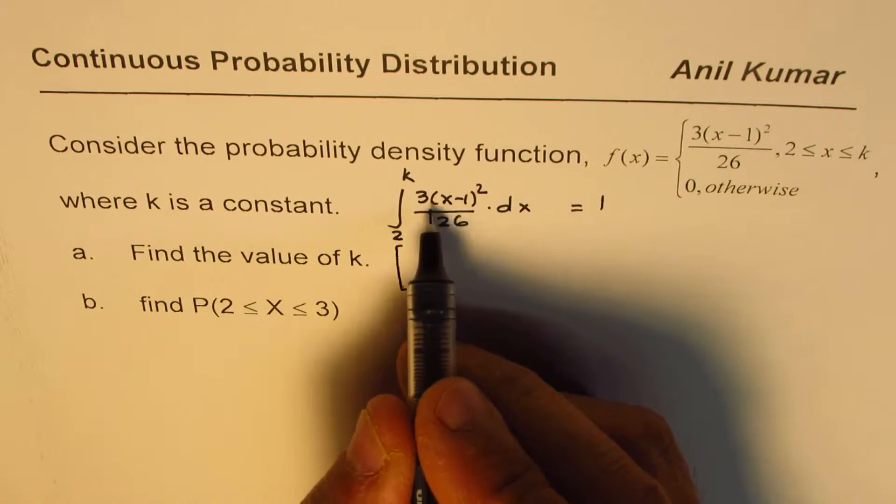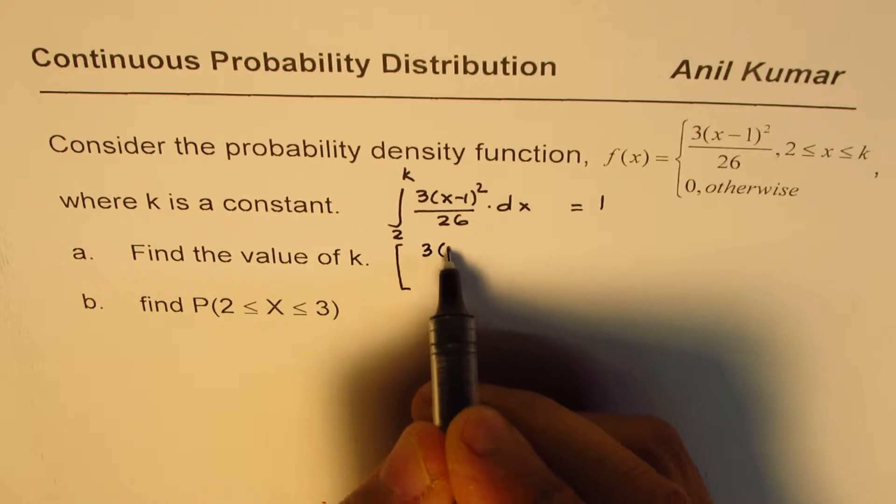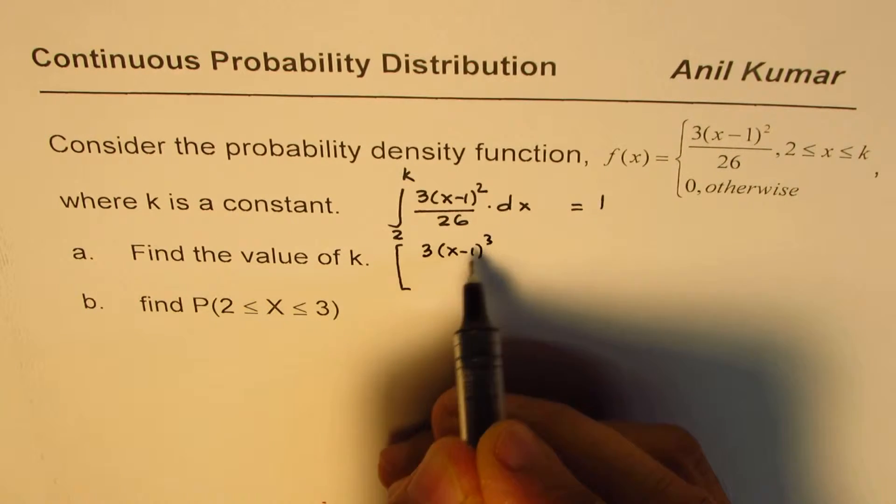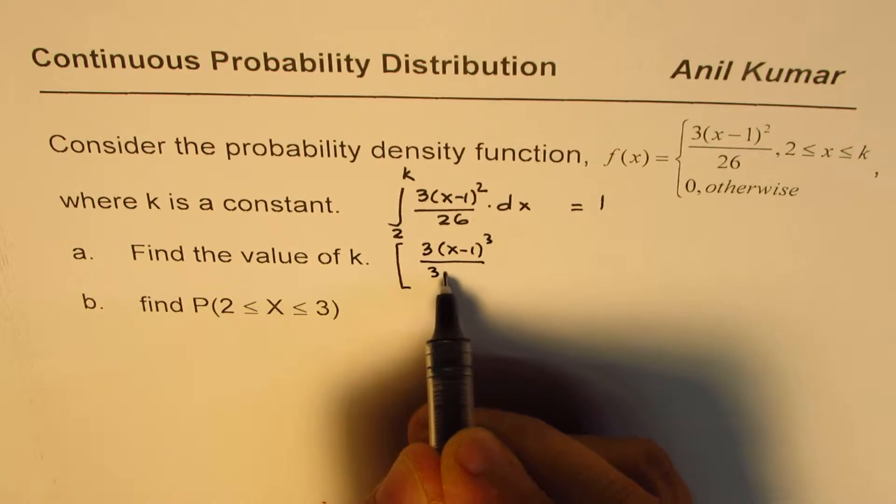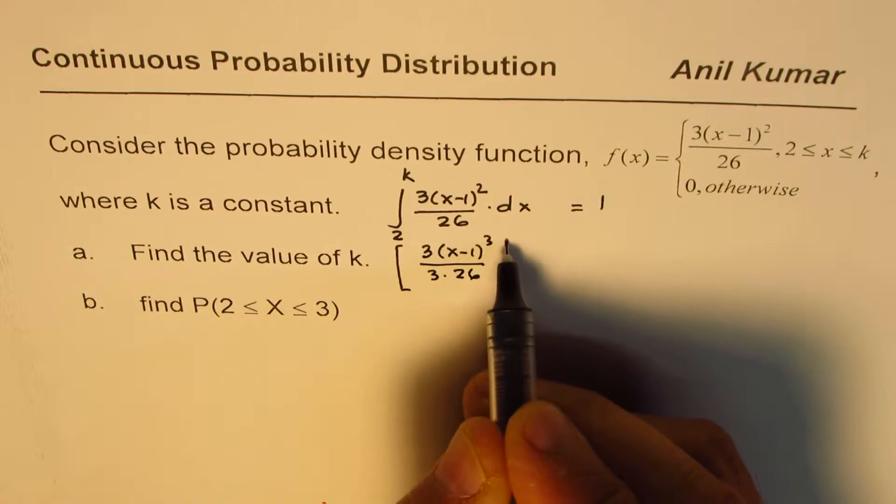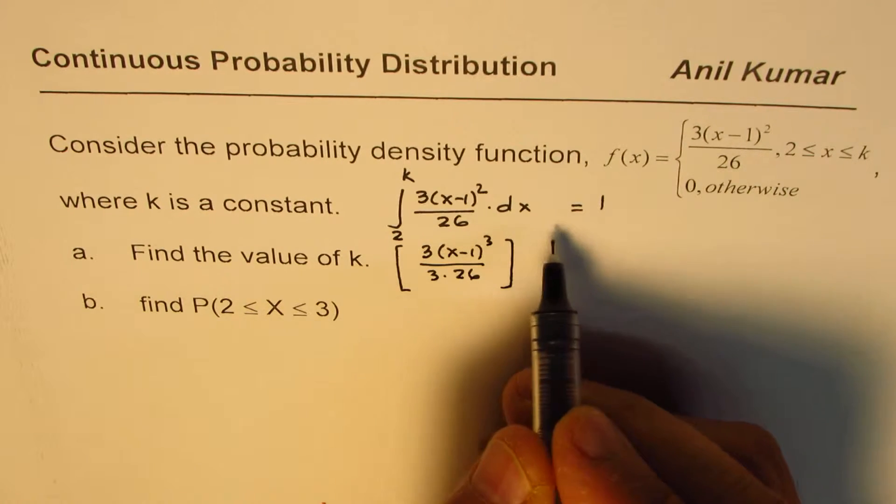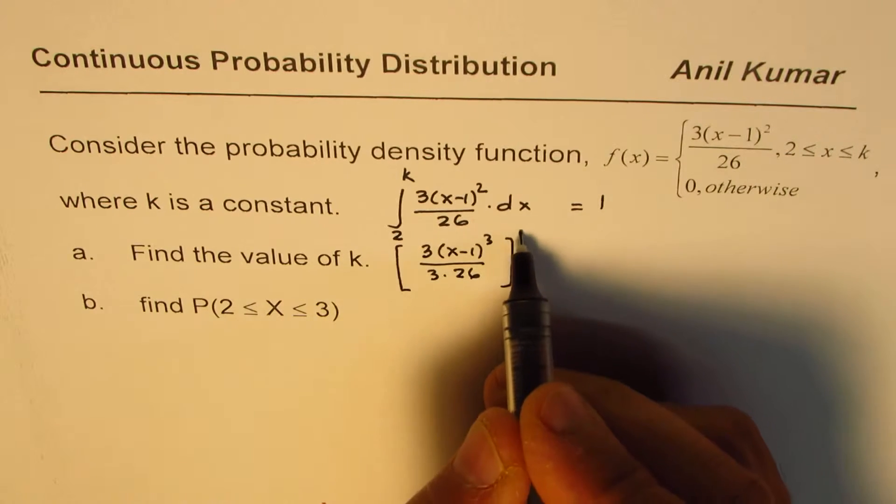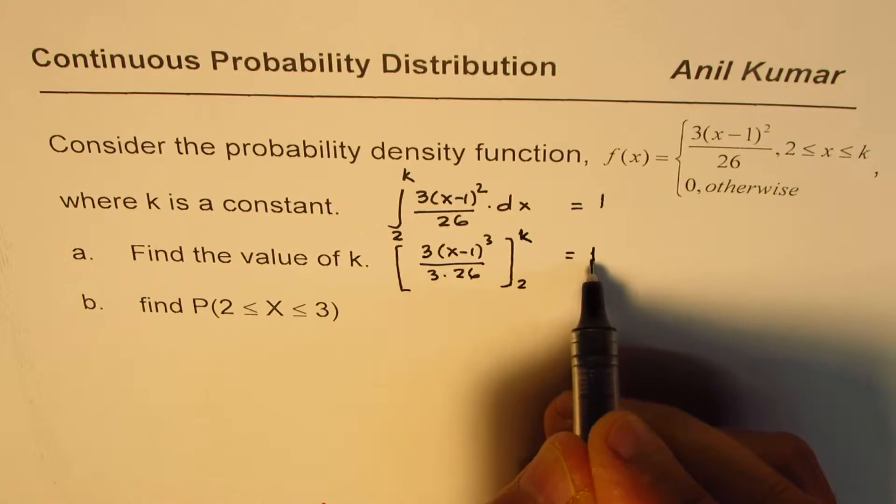Over this period of time, it will become 3(x-1)³ divided by 3 times 26. And then it is from 2 to k, and that should be equal to 1.